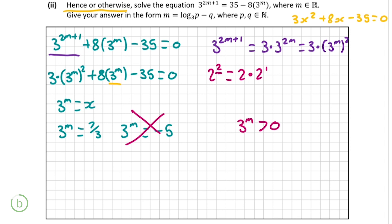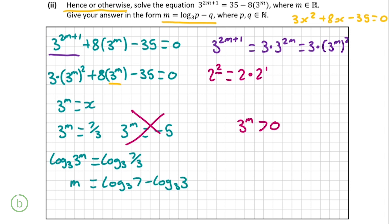Before solving further we read the question, which says give your answer in the form m equals log base 3 of p minus q. The log base 3 gives us a hint: we take the log base 3 of both sides. On the left, log base 3 of 3 to the power of m simply equals m. On the right, log base 3 of 7 divided by 3 can be written as log base 3 of 7 minus log base 3 of 3, using laws of logarithms. Since log base 3 of 3 equals 1, we finally have m equals log base 3 of 7 minus 1, which is the full 10 marks for this question.